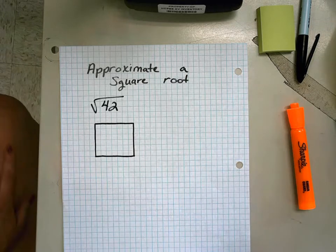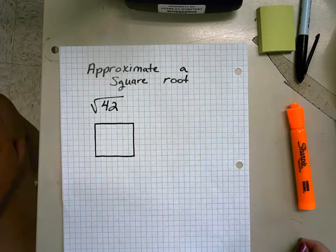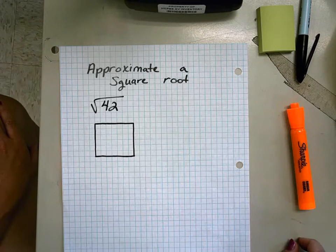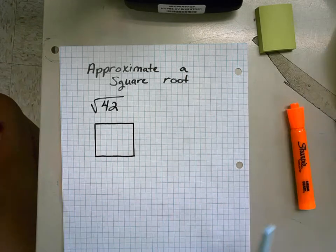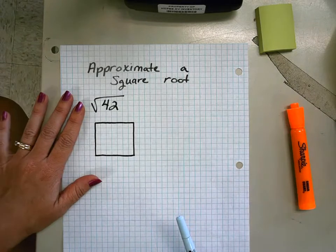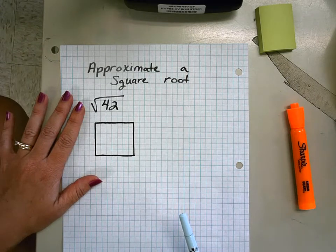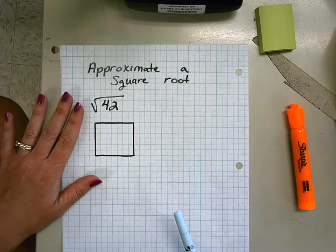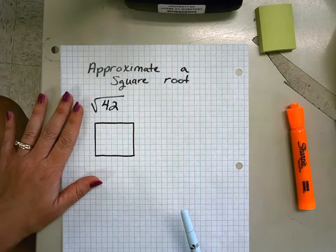We've been talking about square roots. Sometimes we have nice and easy square roots like the square root of 25, which we know is 5, but sometimes we have to approximate a square root. A lot of times students can kind of figure out where it's around, but I wanted to give you a method that will give you a close approximation.